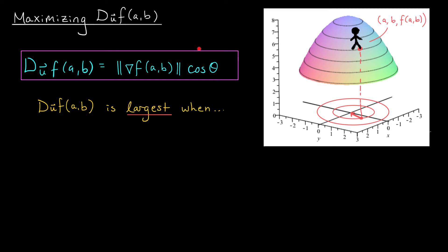To understand why this formula is so important, consider the following scenario. This graph represents a mountain, and on the graph we have a little mountain climber, Hiker Jose. Currently Jose is standing on the mountain above a point ab in the xy-plane, but he wants to reach the peak as fast as possible. So the question is: from point ab, in which direction should he move to reach that peak as fast as he can? Jose wants to move in the direction of the vector u where his directional derivative at ab is as large as possible — he wants to maximize his rate of change. So how do we choose a unit vector u that maximizes the directional derivative?